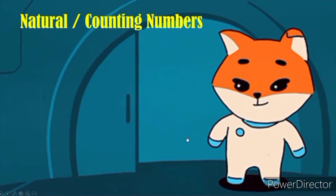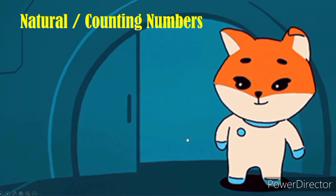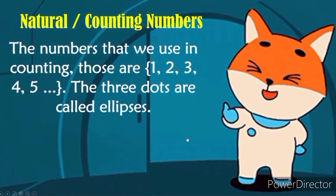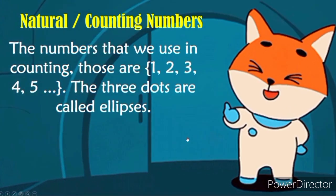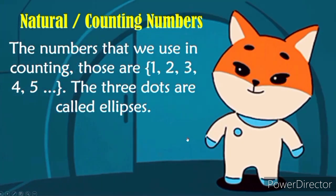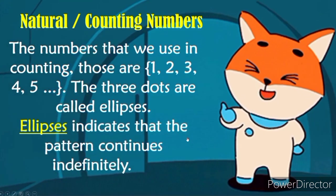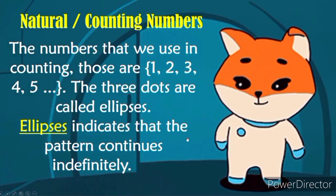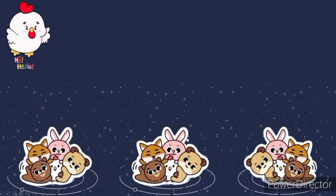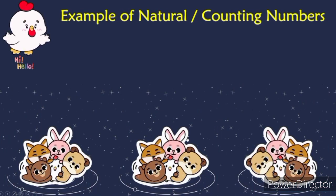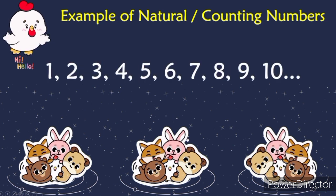Now let's identify natural or counting numbers. The numbers that we use in counting. Those are 1, 2, 3, 4, 5, and so on. The three dots are the ellipses. Ellipses indicates that the pattern continues indefinitely. Now let's have an example of natural or counting numbers. We have 1, 2, 3, 4, 5, 6, 7, 8, 9, 10, and so on.